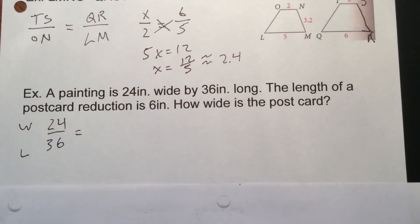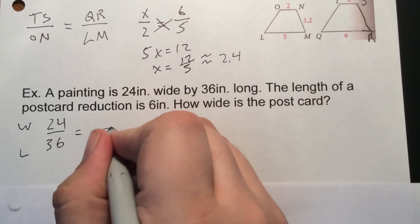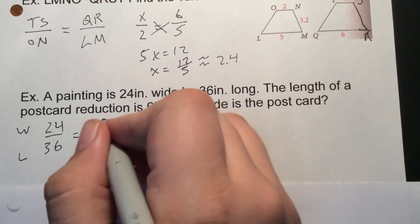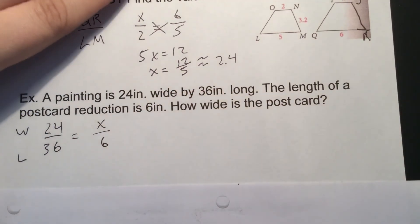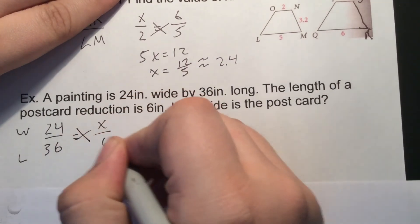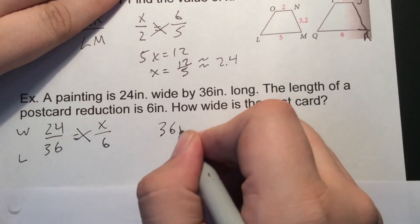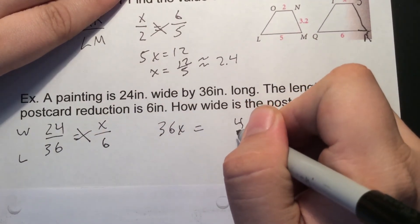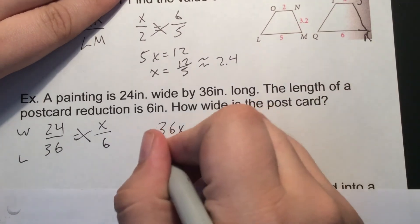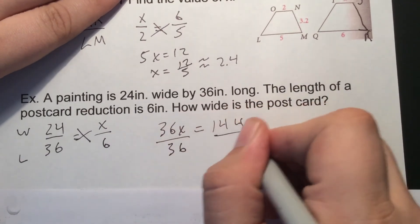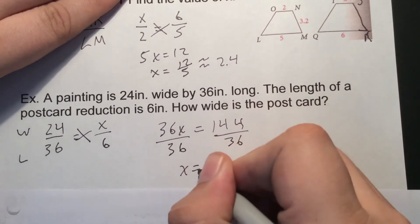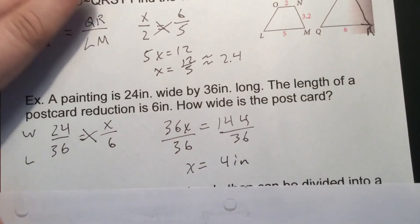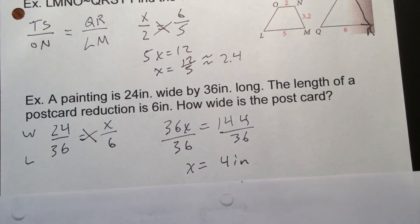We have to set the other side up the same thing. So it says length is going to be 6. So length is on our bottom and then width is going to be the top. We don't know. So we put an X and again, cross multiply and solve. So we have 36X equaling 6 times 24. So that 24 by 6 painting we're going to reduce down to a 4 by 6 postcard.